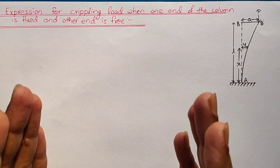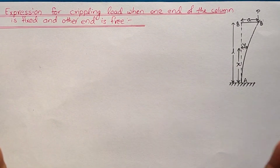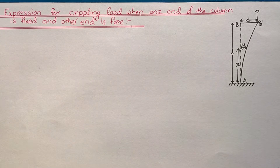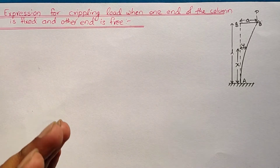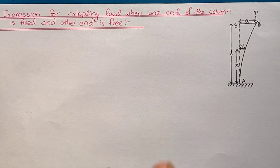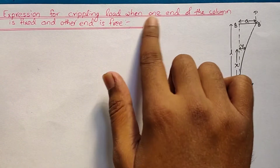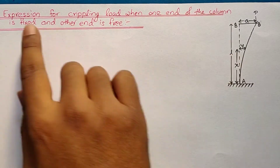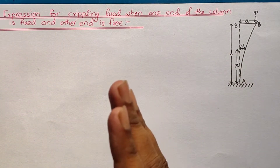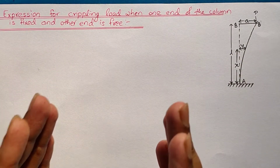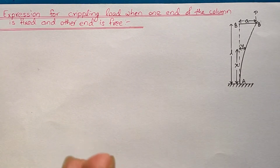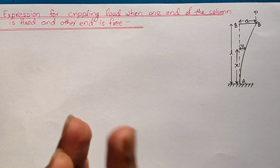Hey guys, welcome back to CV Learning Online. Today in this video I am going to discuss how to derive an expression for the crippling load when one end of the column is fixed and the other end is free. In the previous video I discussed how to derive an expression when both ends of the column were hinged.